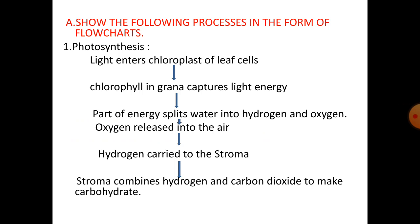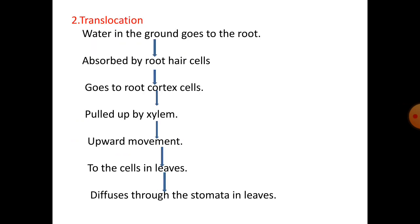Photosynthesis flow chart: Light enters the chloroplast of leaf cells. Chlorophyll in the grana captures light energy. Part of that energy splits water into hydrogen and oxygen. Oxygen is released into the air. Hydrogen is carried to the stroma, where it combines with carbon dioxide to make carbohydrate.